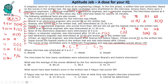Now mapping the engineering branches: Fagun is the computer engineer, mechanical and both electrical engineers are accounted for. That means Ananya and Gopal are the remaining electronics engineers. So Ananya is an electronics engineer and Gopal is also an electronics engineer.